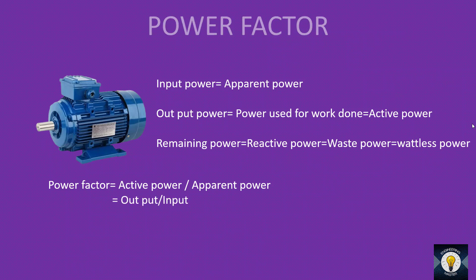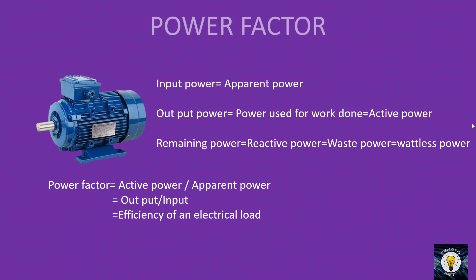The power factor is defined as active power divided by apparent power. Active power is the output power; apparent power is the input power. Output divided by input — what is output divided by input? It is efficiency. So we can say power factor is the efficiency of an electrical load, and power factor correction means we are improving the efficiency of the system.